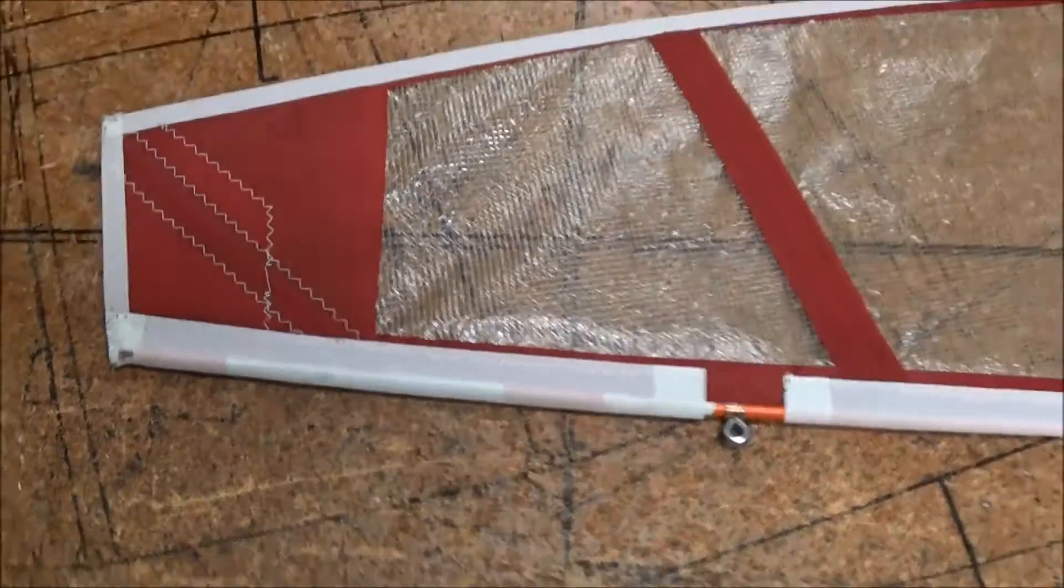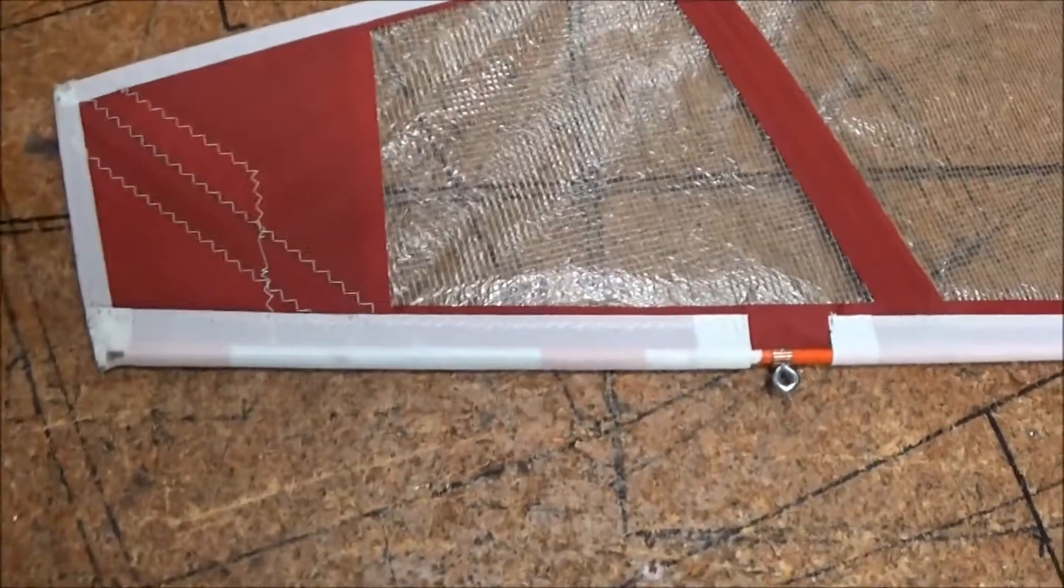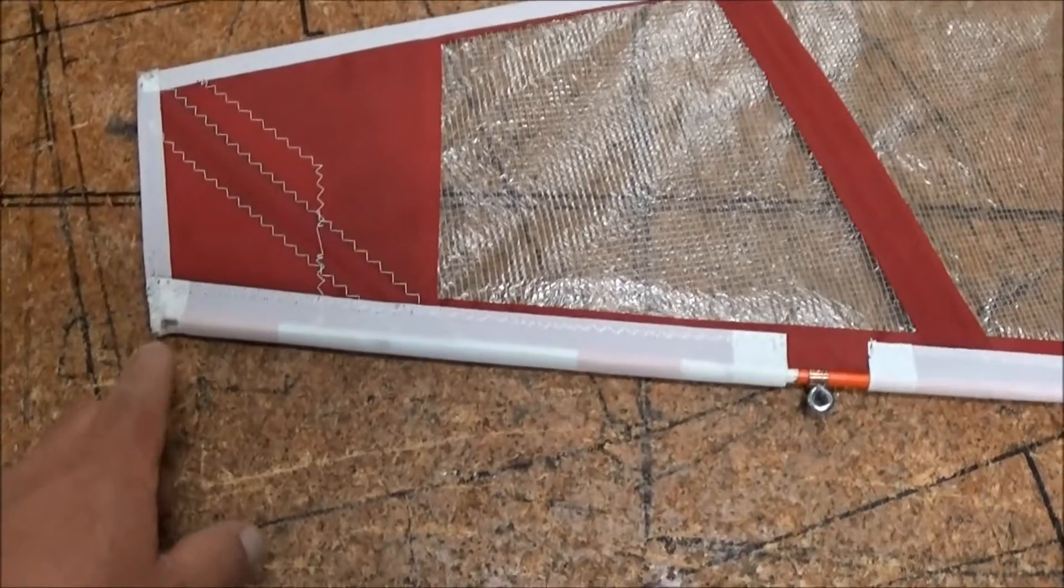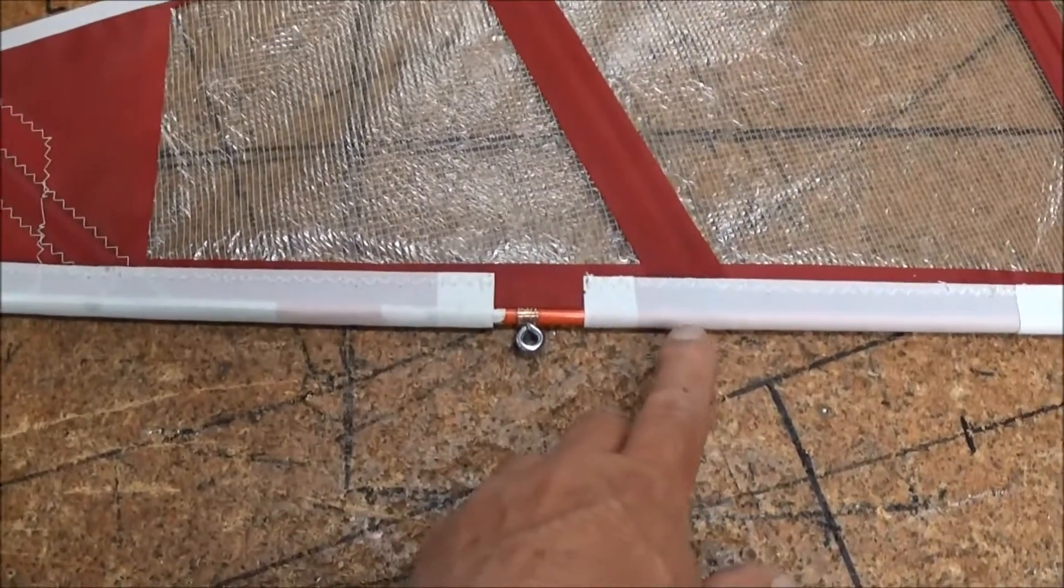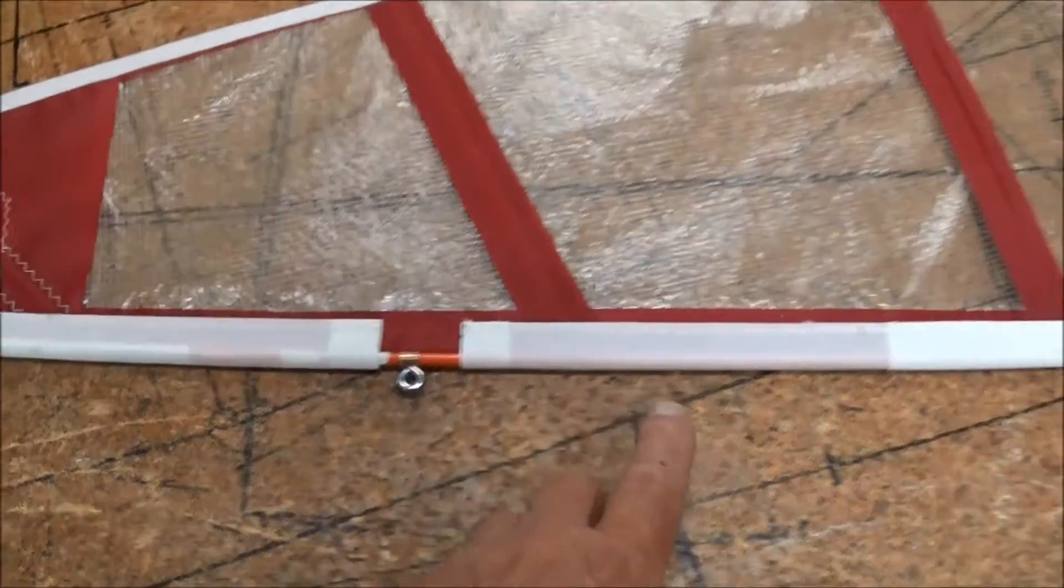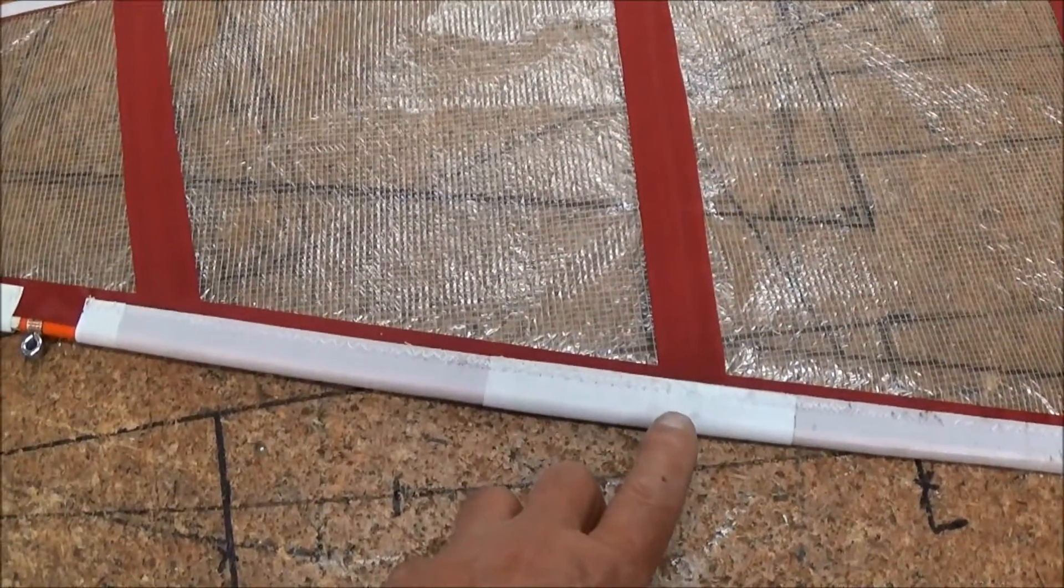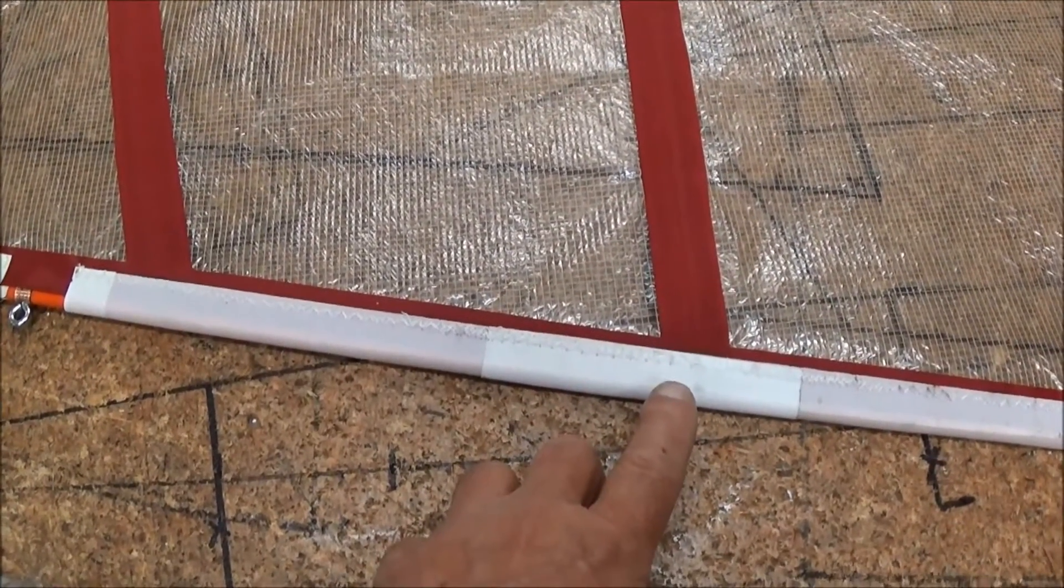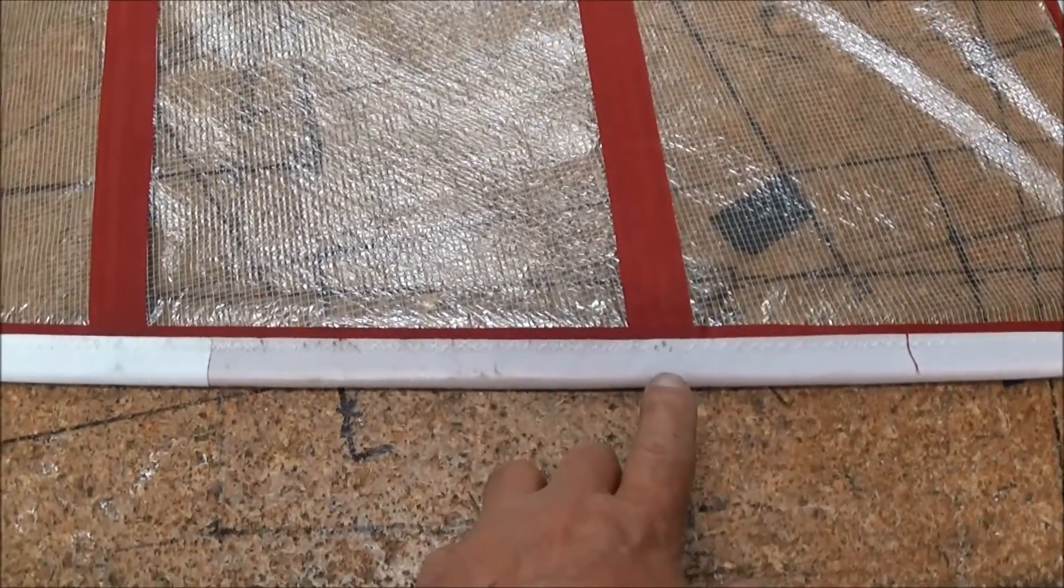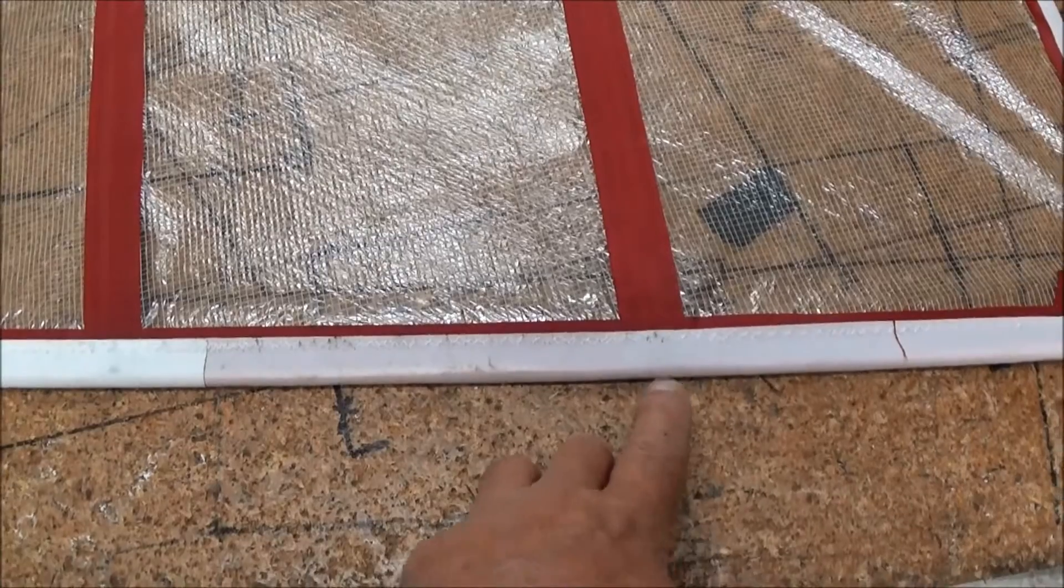Now we're going to start with the battens. The batten lengths from the top to the first mark on the batten is 14 and a quarter inches. The next one down is 23 and a half inches from the top and the next one is 33 and a quarter inches from the top. These are the marks where the batten is going to lock.